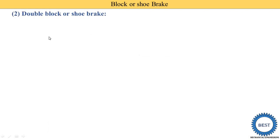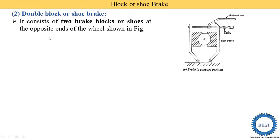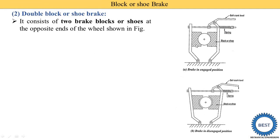The second type is the double block or shoe brake. In this brake, two brake blocks or shoes are used at the opposite ends of the wheel. In the diagram, you can see the rotating wheel with two blocks placed on opposite sides. There is one brake arm, a bell crank lever, and a spring. The first diagram shows the engaged position where the block and wheel are in contact and the wheel is stopped.